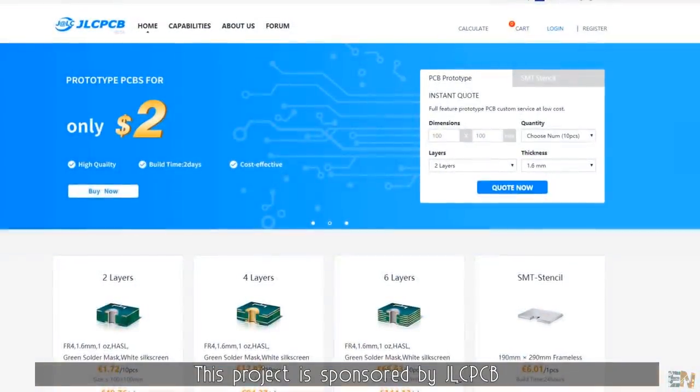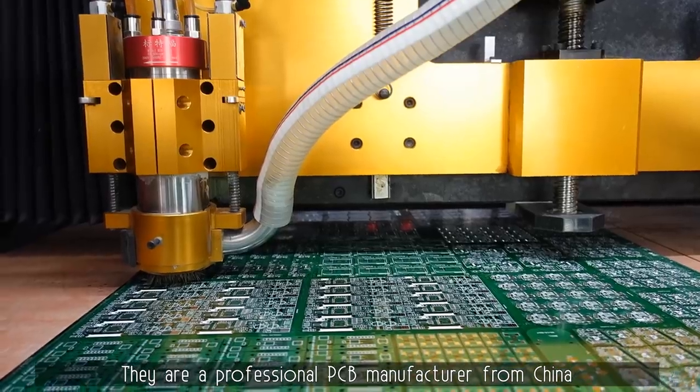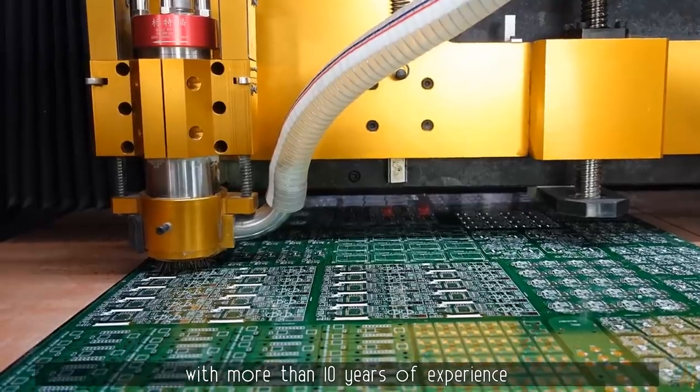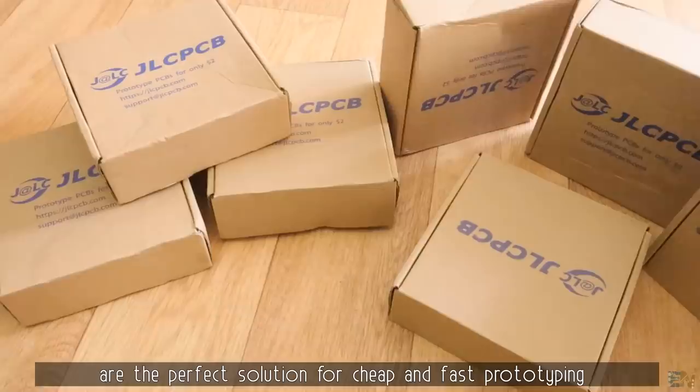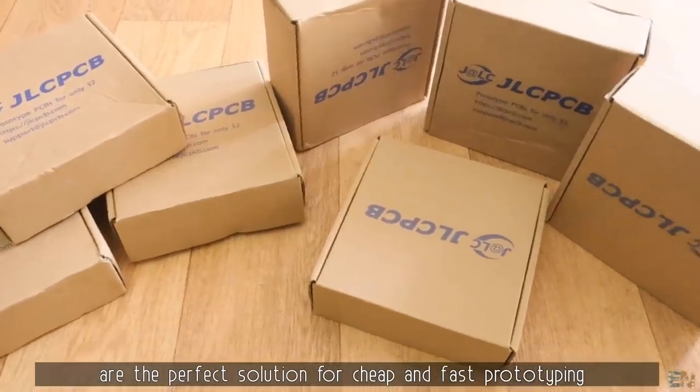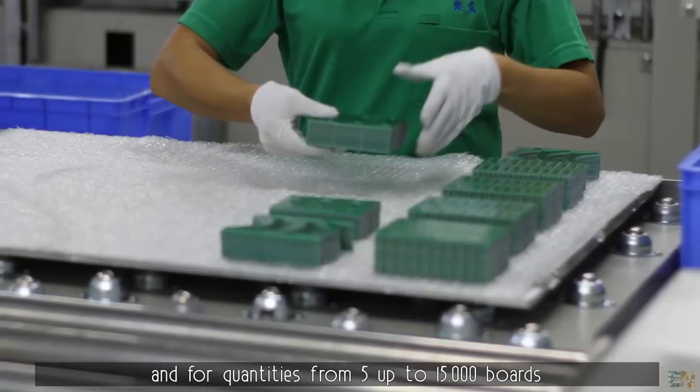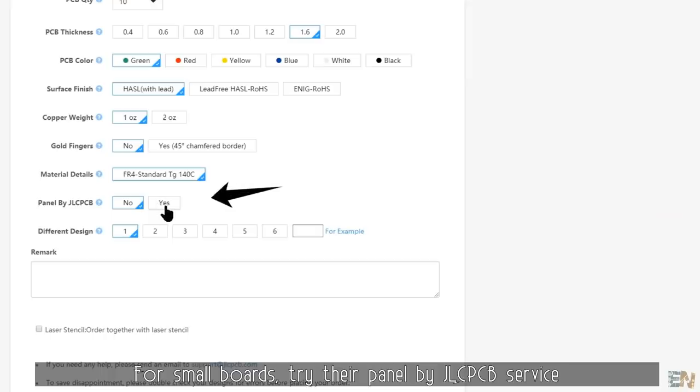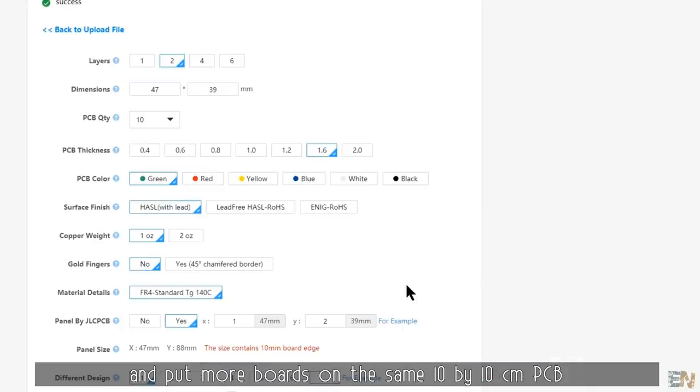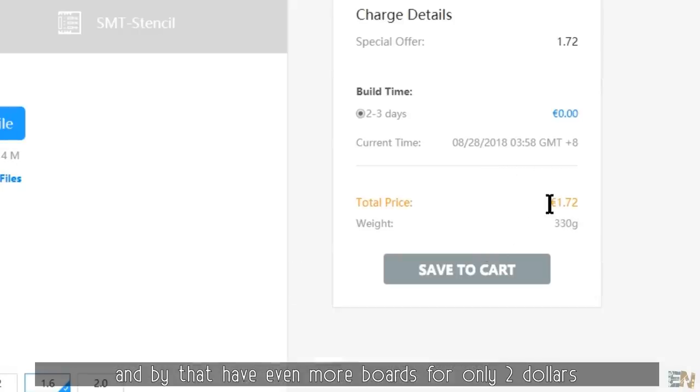This project is sponsored by JLCPCB. They are a professional PCB manufacturer from China with more than 10 years of experience. I can easily say that their services are the perfect solution for cheap and fast prototyping and for quantities from 5 up to 15,000 boards. For small boards you should try the panel by JLCPCB service and put more boards on the same 10x10cm PCB and by that have even more boards for only $2.